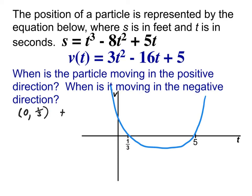What about from one-third up to five? Notice between one-third and five I'm below the x-axis, which means my velocity is negative — and a negative velocity means a negative direction. That's what velocity really means: it tells you whether you're going in the positive or the negative direction. And then from five out to infinity, it would be positive again, because it's above that axis. With a nice graph like this, we can just sketch it and know the intervals from the graph alone.